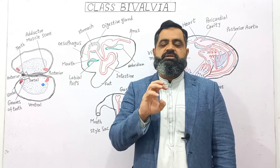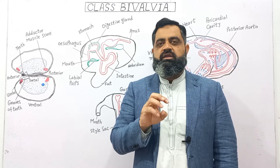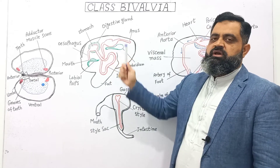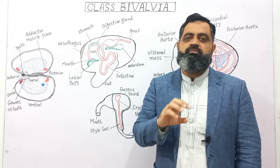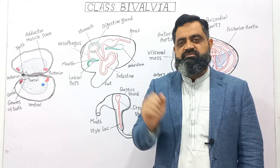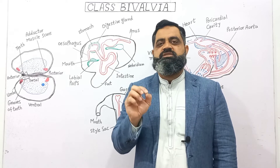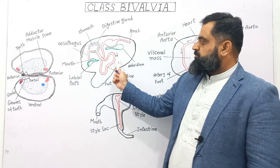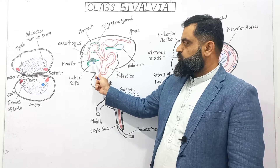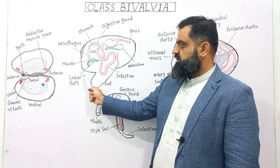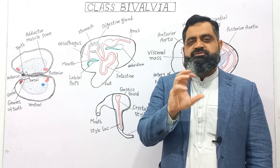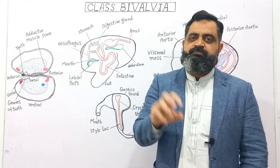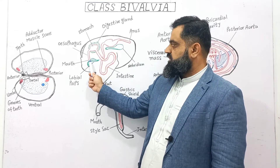Among the incoming particles, some are non-food particles like stones and sand. These are pushed back toward the posterior side of the body and thrown out through the excurrent siphon. These are known as pseudo feces because they have not been processed by the digestive system. When food particles reach the mouth, there are lobes known as labial palps — specialized structures that help collect food particles and push them into the mouth cavity.